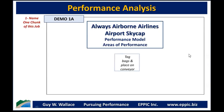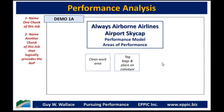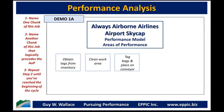They might say, 'we tag bags and place them on the conveyor.' I write that in the center of the chart because I don't know if this is the first thing, last thing, or somewhere in the middle. My next question is: does everybody agree that part of the job is tagging bags and placing them on the conveyor? And everyone says yes, of course. Then I say: what do you do before that? They say we clean up the work area. What before that? We obtain tags from inventory. Before that? Come to work. Okay, so we're not going to include that.